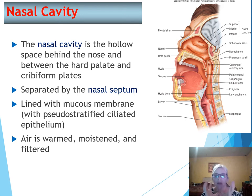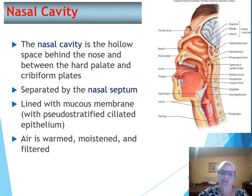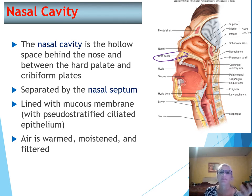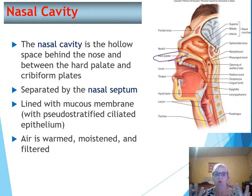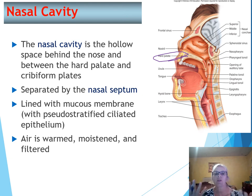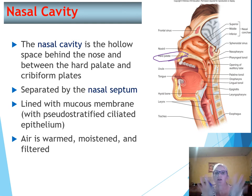The nasal cavity is a hollow space located right behind the nose between the hard palate and the cribriform plates. It's separated by the nasal septum. We have nasal conchae that support the mucous membranes that line the nasal cavity and help increase its surface area. The mucous membrane warms the air that comes in and traps dust, keeps things moist, and works like a filter. That mucous membrane has pseudostratified ciliated epithelium, so when the mucus traps foreign invaders, the cilia can sweep it out.